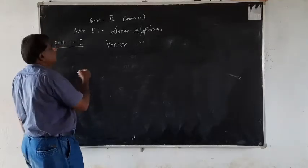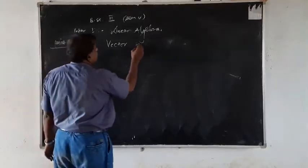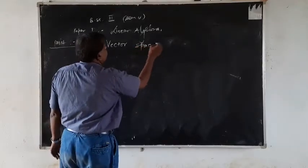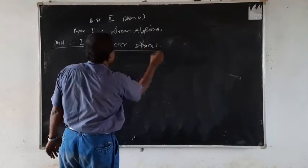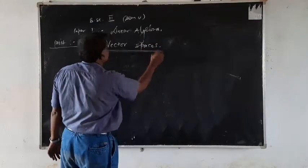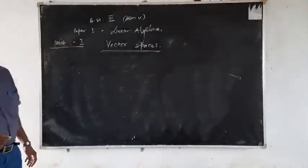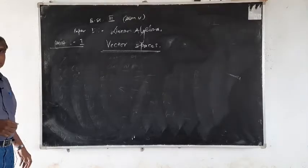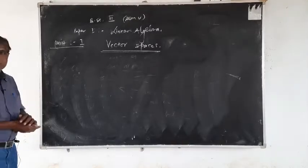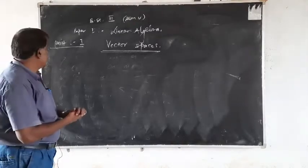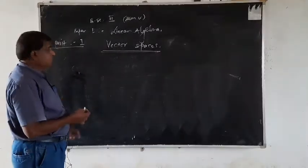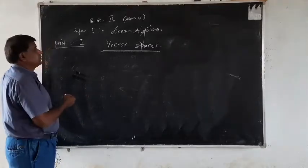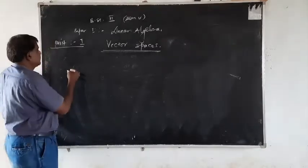Linear Algebra, the first unit is Vector Spaces. We know the idea of a group and we studied about the group axioms. So, we define the term Vector Spaces.